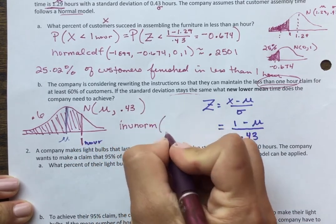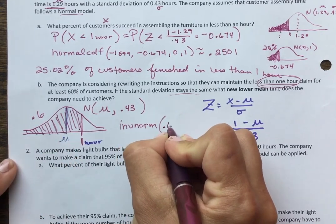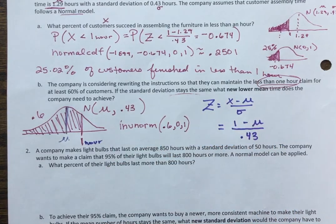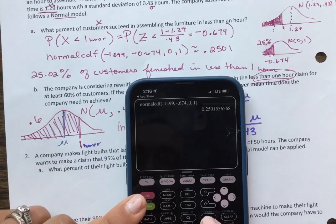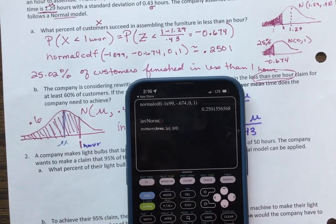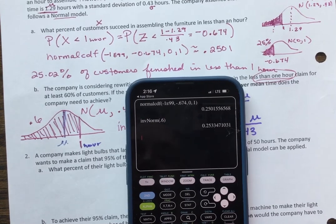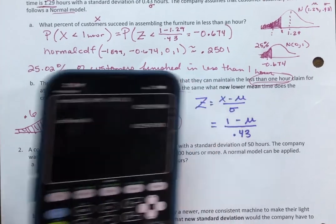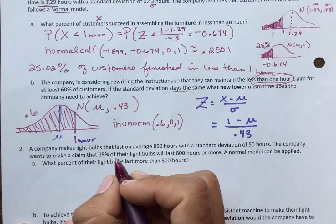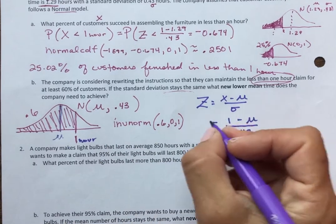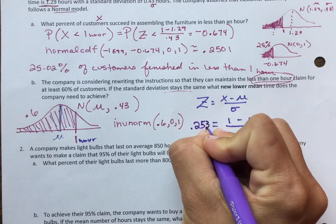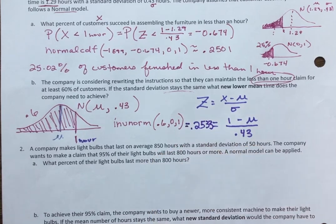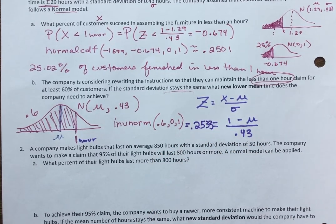Inverse norm, the area to the left is 60%. I'm finding a z-score, so the mean is zero. Standard deviation is one. Inverse norm is still in that second VARS. Second VARS. Scroll down to inverse norm. 0.6, and I get 0.2533. So my z-score is 0.2533. That is my z-score that I just found. This is my z-score. I used inverse norm, found the z-score, that standardized value, and now I can do a little bit of algebra.